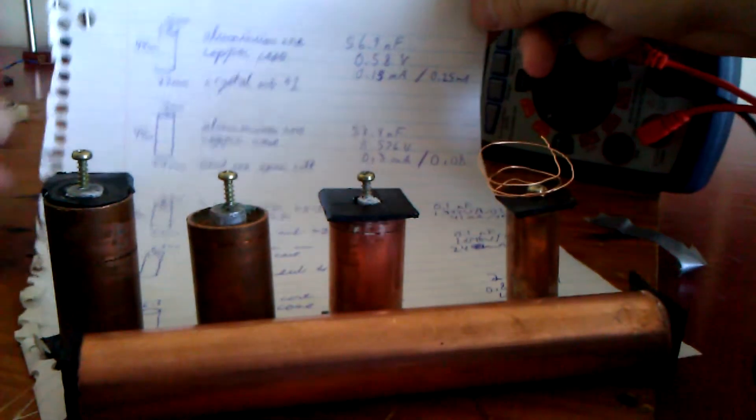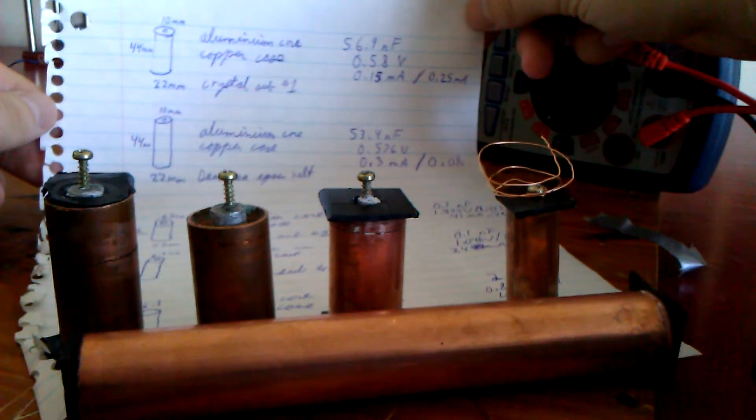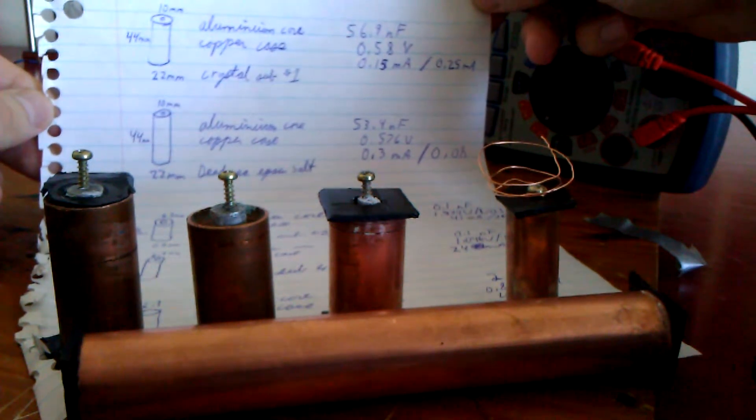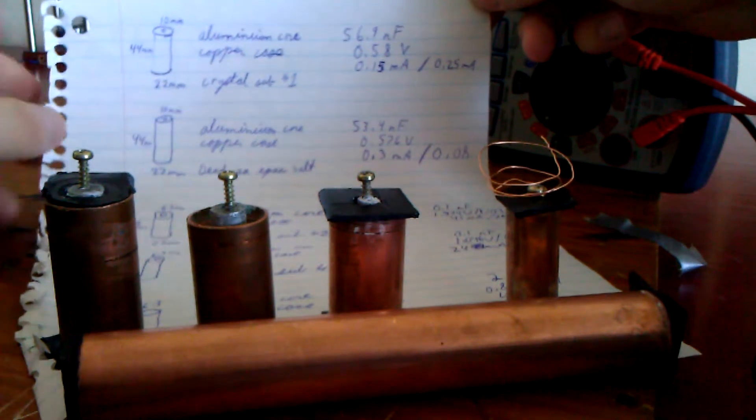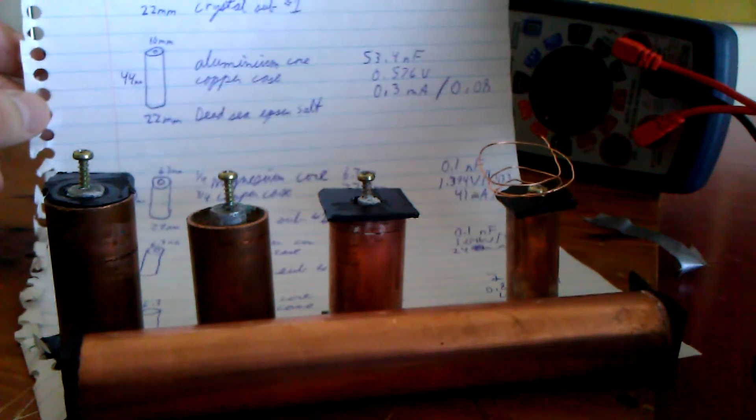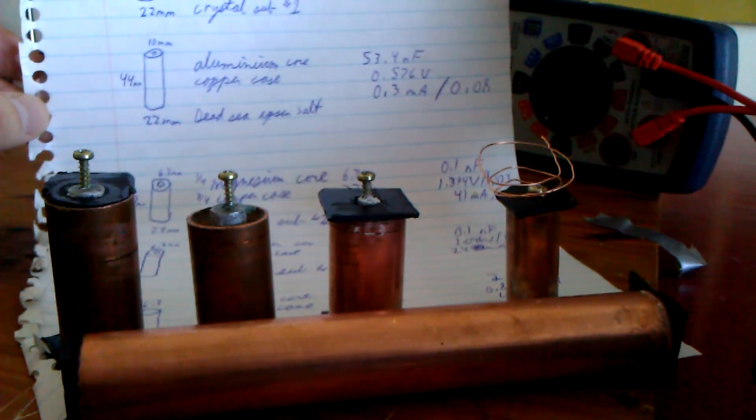The first one on our far left is the aluminum core copper case with the laser saber crystal composition. You can see the values there. Then the next one is Dead Sea Epsom salts.